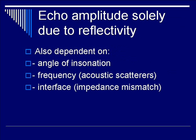The next commonly assumed principle is that the echo amplitude returning to the transducer upon scattering from reflectors is solely due to the intrinsic reflectivity property of the material. However, that is not solely the case. Echo amplitudes are modulated depending on the angle of inclination of the ultrasound probe relative to the structure. They are also changed by frequency as seen by acoustic scatterers, and by the material on either side of the particular interface.